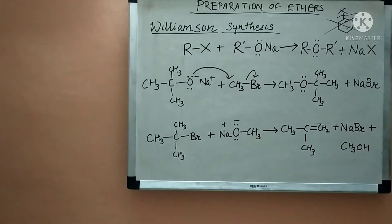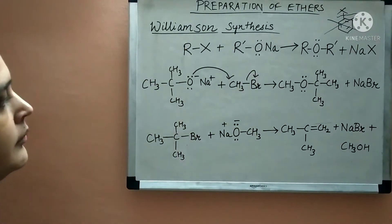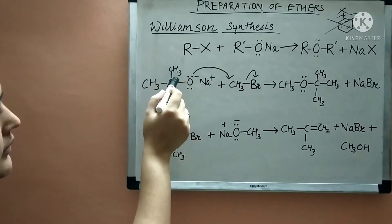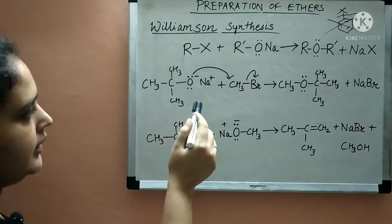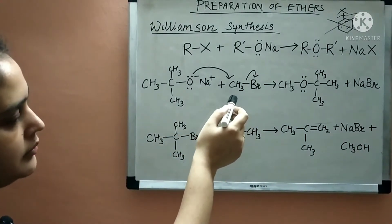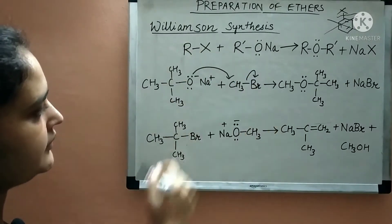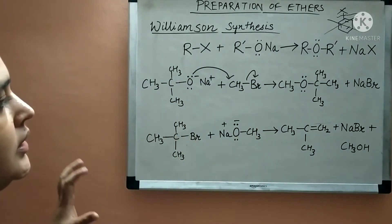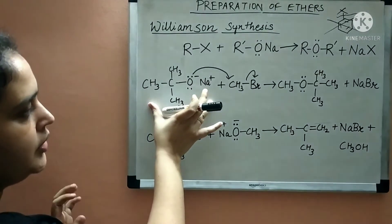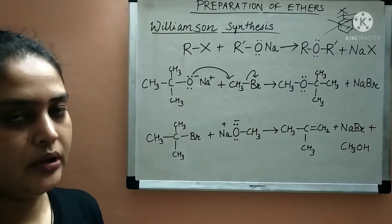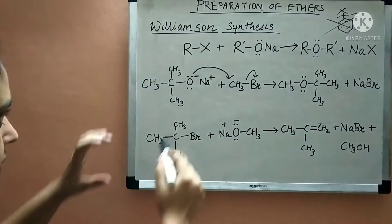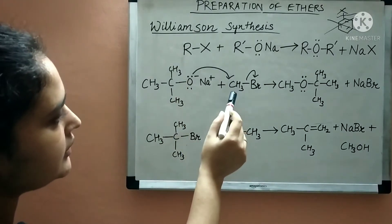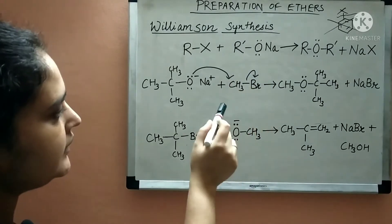Let us see an example of Williamson synthesis. We take sodium alkoxide where the tertiary butyl group has a carbon attached to three methyl groups, and the alkyl halide is bromomethane. In the SN2 mechanism, the nucleophile attacks the substrate. The negatively charged oxygen atom with its lone pair of electrons attacks the carbon of bromomethane, and the bromide ion leaves along with sodium.